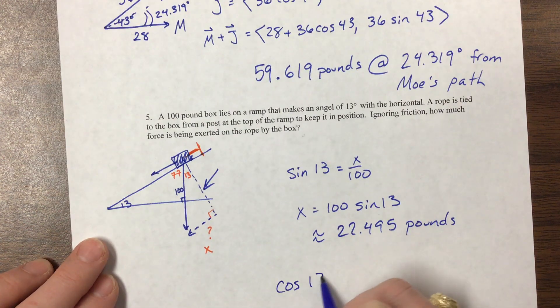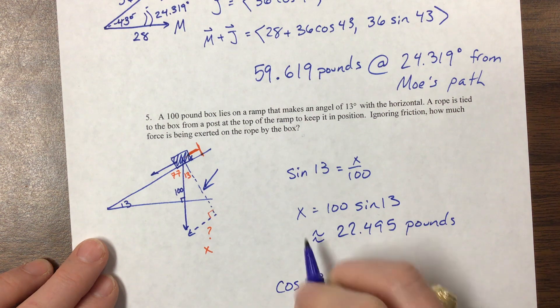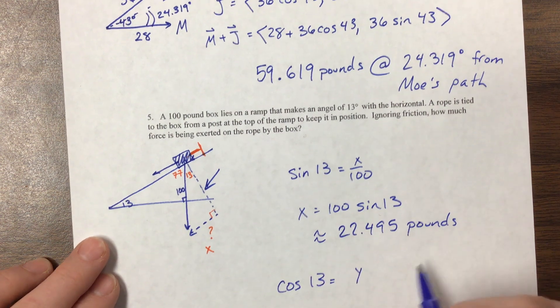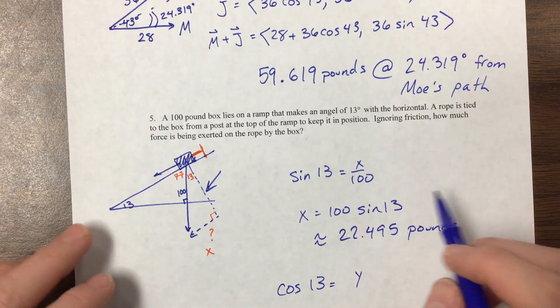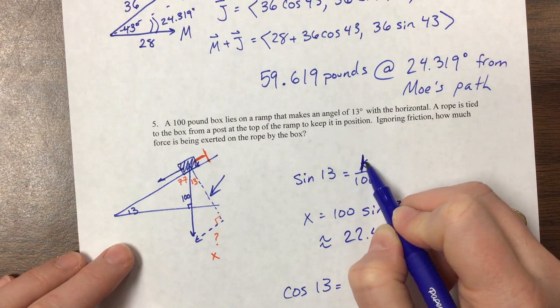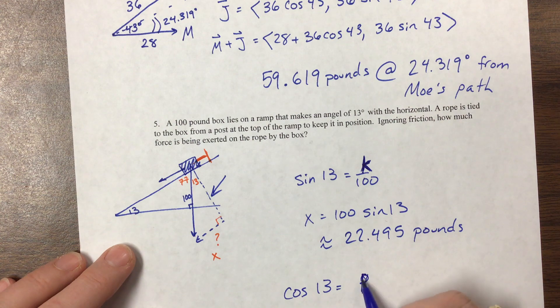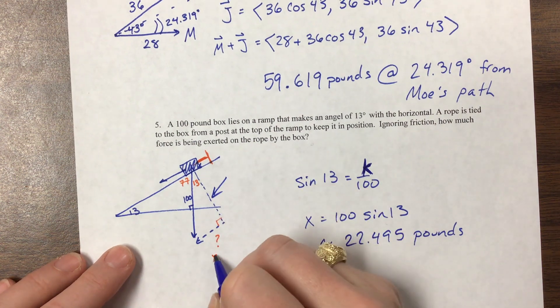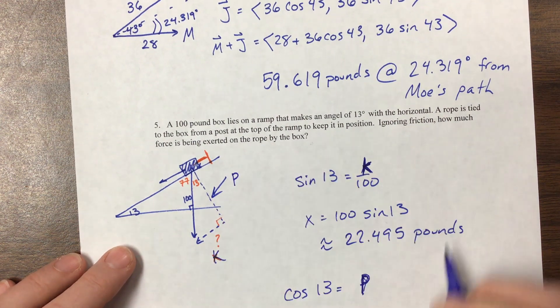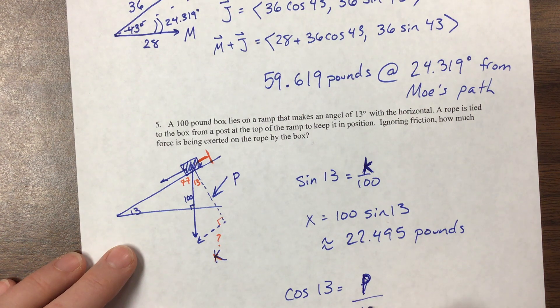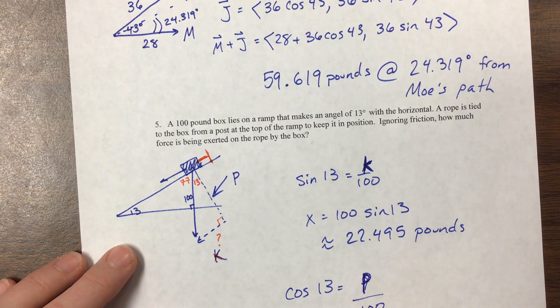They didn't ask it in this problem but I have seen others that do. Let's call this K and this one P, so this became K and this became P. So cosine of 13 would be equal to P over 100, so the P value is this.